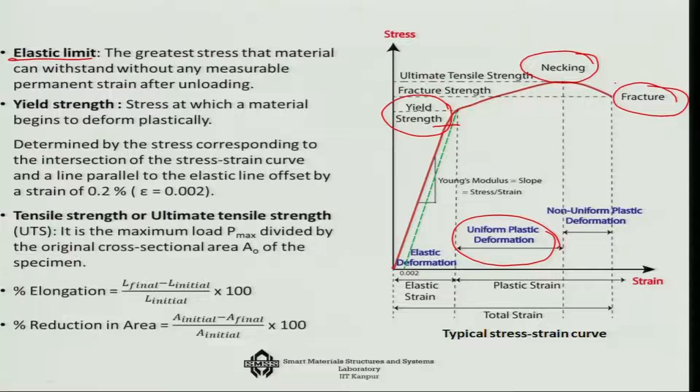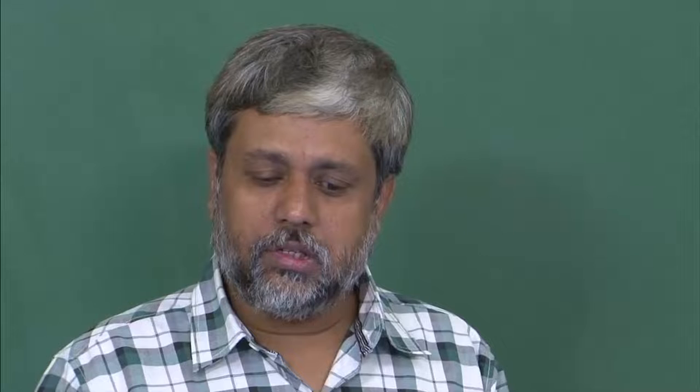Beyond the necking point you get non-uniform plastic deformation. The plastic strain can be divided into two parts: uniform plastic deformation and then non-uniform plastic deformation until failure. The point up to necking gives us the ultimate tensile strength — the maximum load divided by the original cross-sectional area. Beyond that point, the material moves towards fracture. Ultimate tensile strength plays a very important role in product design.